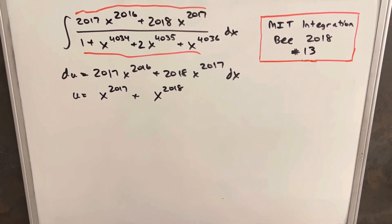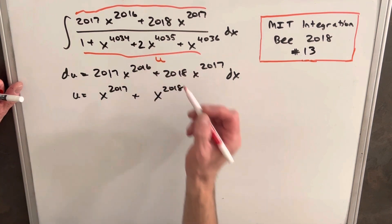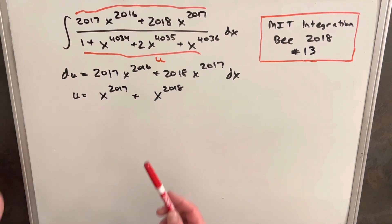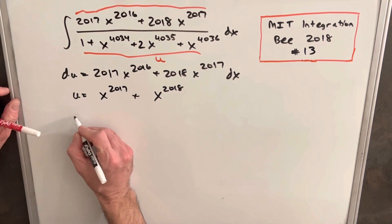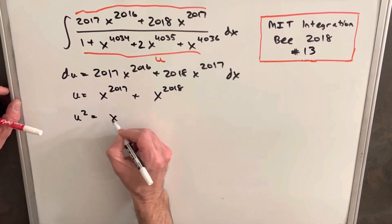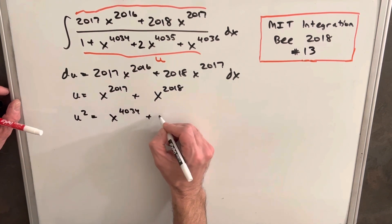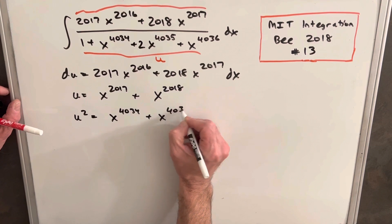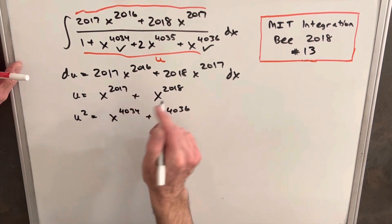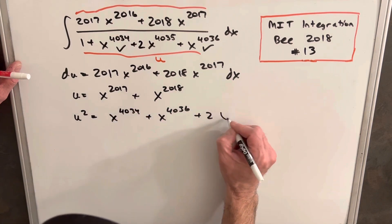And then next what we really would like is we want it'd be nice if our denominator was u but it clearly is something different. So the denominator is clearly not u but maybe u squared. So let's see what happens when we just square our u. So we square this term we're gonna have x to the 4034, we'll square the second term and we get x to the 4036.